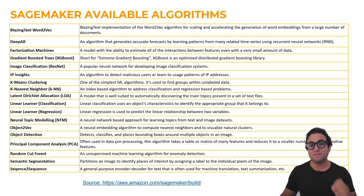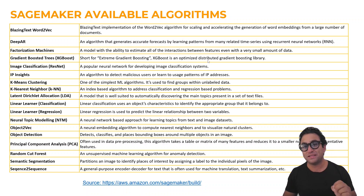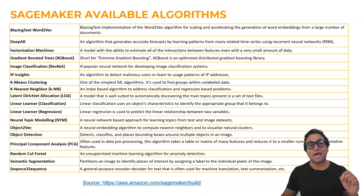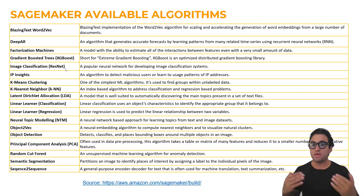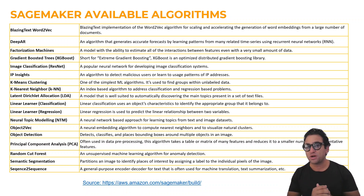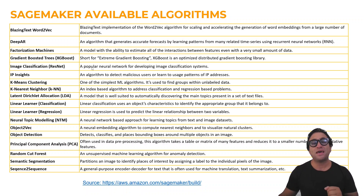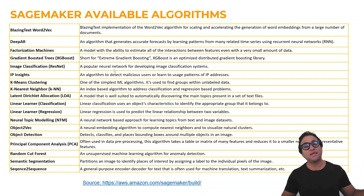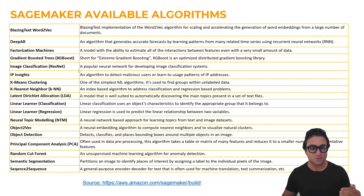XGBoost is short for Extreme Gradient Boosting, and it is an optimized distributed gradient boosting library. We also have image classification — to perform image classification we can use a state-of-the-art artificial neural network known as ResNets, or Residual Neural Networks. We can use AWS SageMaker built-in algorithms to do image classification for us.